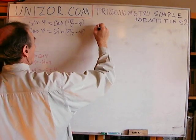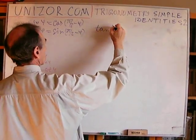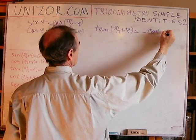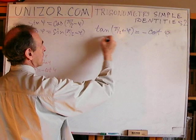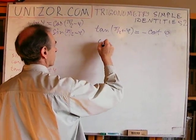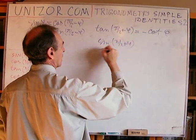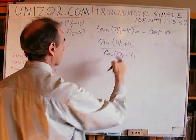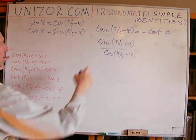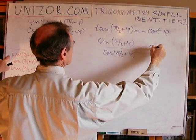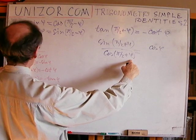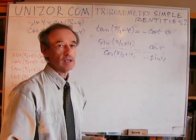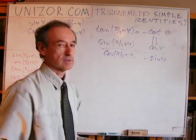Now, other cases are tangent of phi over 2 plus phi is equal to minus cotangent of phi. Well, let's do it this way. I know the tangent, by definition, is sine over cosine, right? So it's no big deal, really, if I will use this and replace their values with whatever I have already found before. Sine of phi over 2 would be cosine of phi. Cosine of phi over 2 plus phi would be minus sine phi. Now, what is cosine over sine? That's a cotangent and a minus sign. So that's how we can prove it.